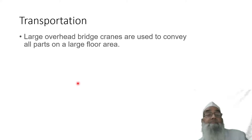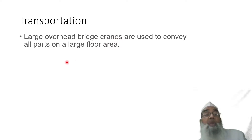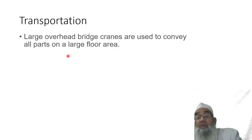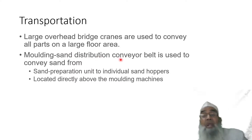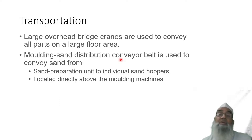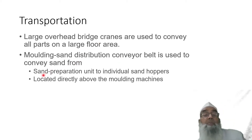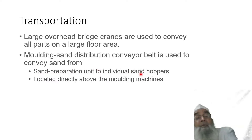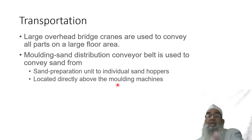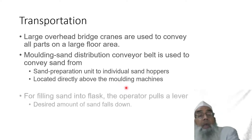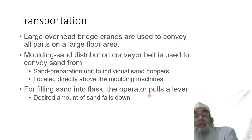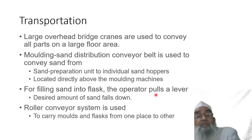Transportation can be done by using large overhead bridge cranes to convey all parts over a large floor area. Conveyor belts are employed to convey sand from the sand preparation unit to individual sand hoppers located directly above the molding machines. The operator pulls a lever and the desired amount of sand falls down. Roller conveyors are used to carry molds and flasks from one place to another.